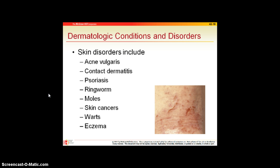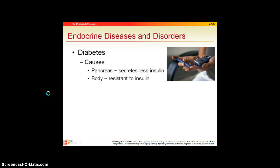Eczema is shown in the picture here — it's an extreme dry skin condition where the skin gets so dry it cracks and bleeds. It is often an allergy to ingredients in soaps or laundry detergents. Using the right lotions and switching bath and soap products can help prevent outbreaks of eczema.